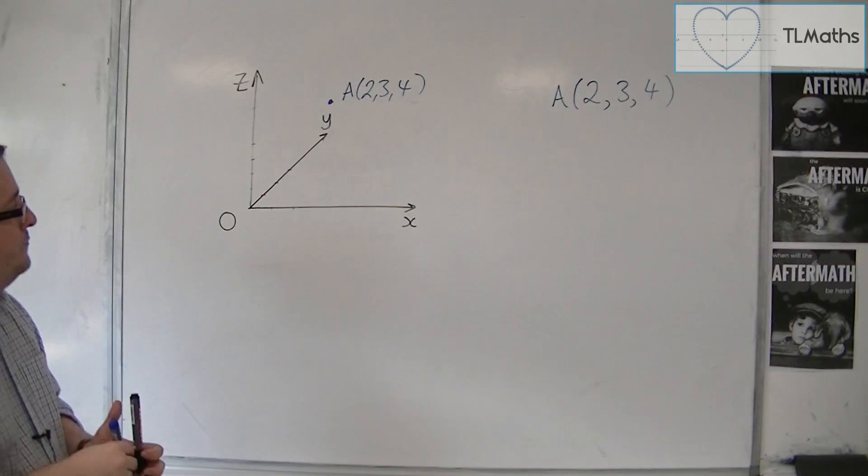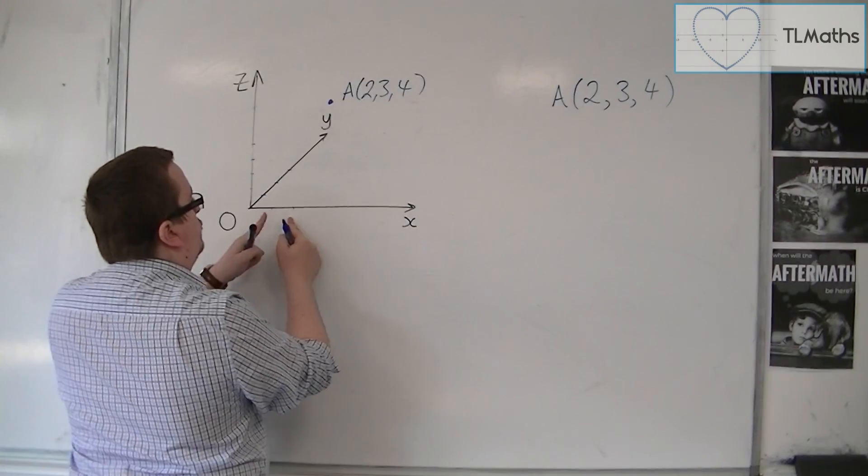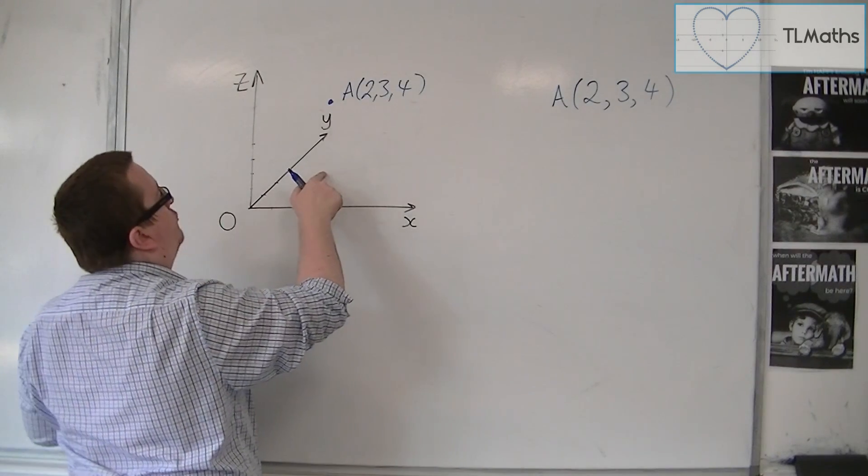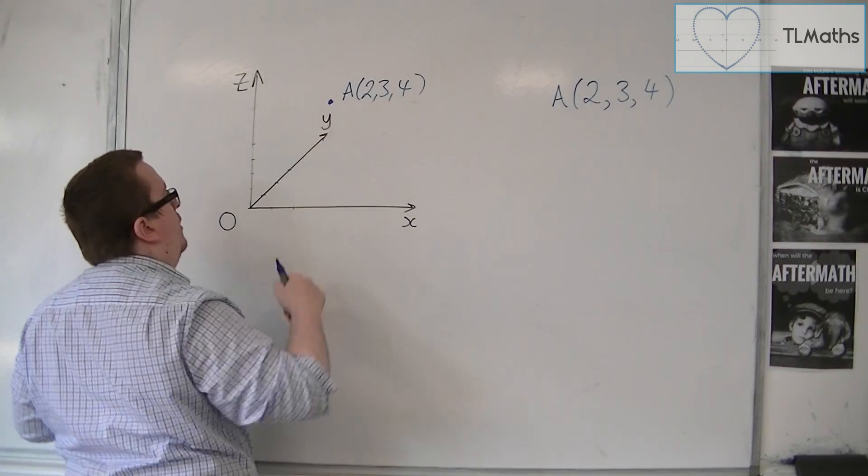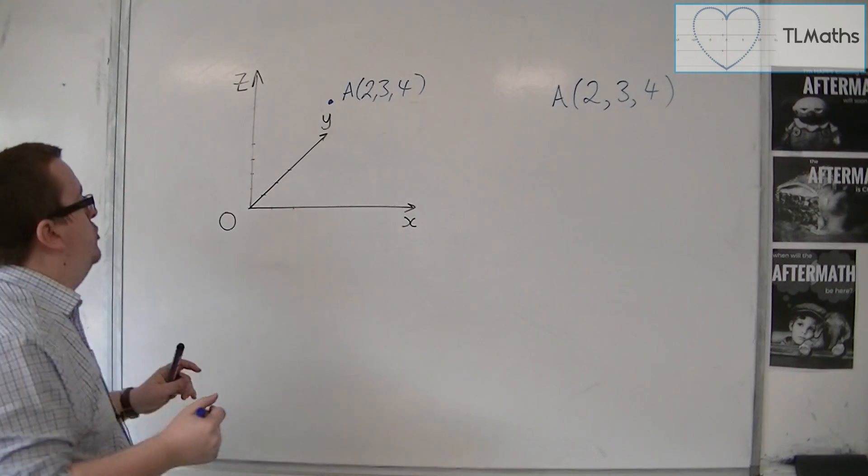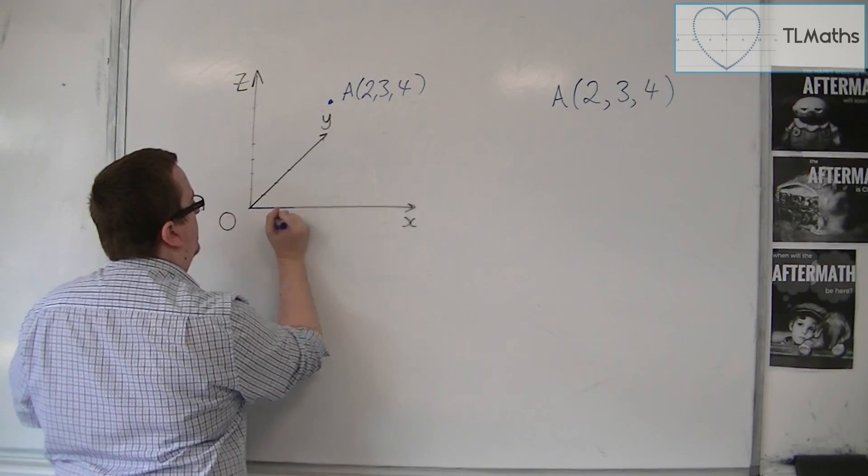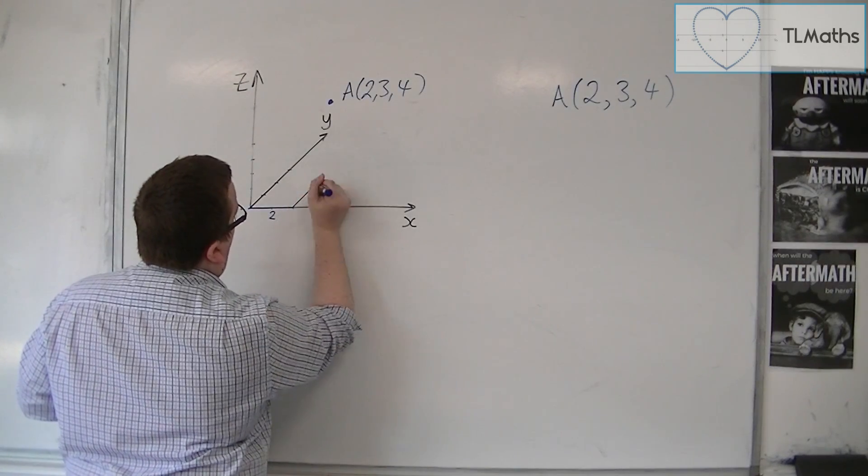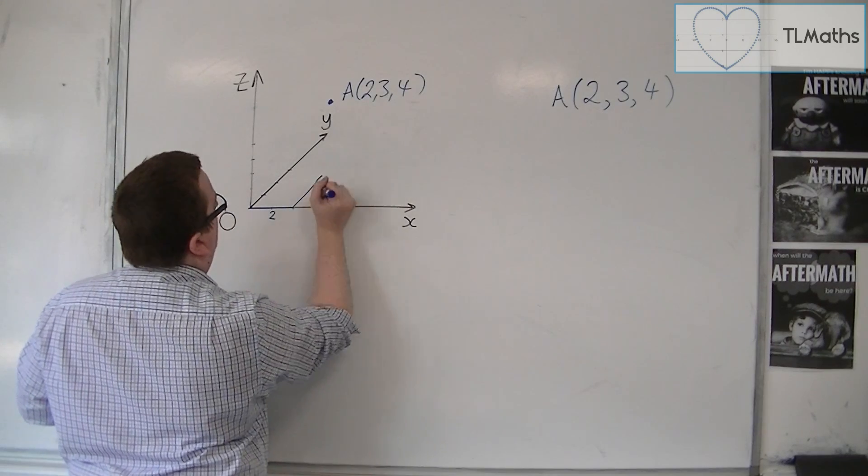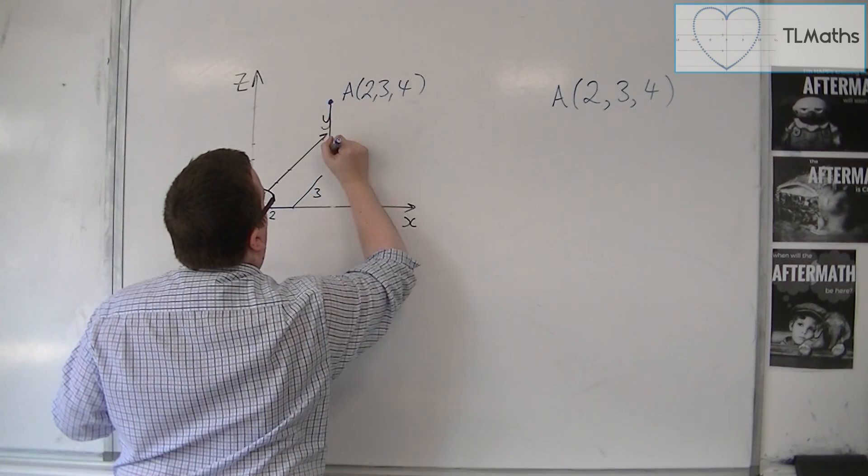And what's happened is it's gone 2 along in the x direction, 3 along in the y direction, and then 4 along in the z direction. So 2 along there, then 3 along there, and then 4 along there.